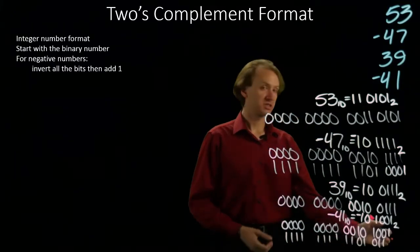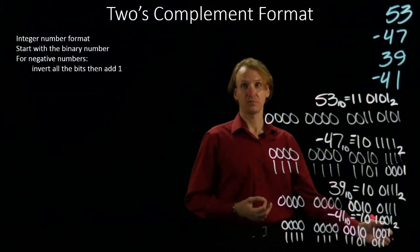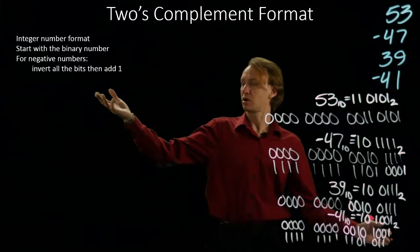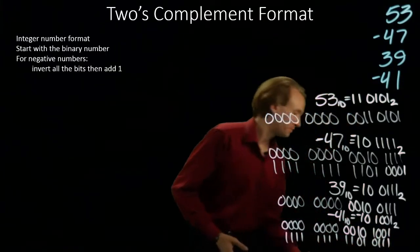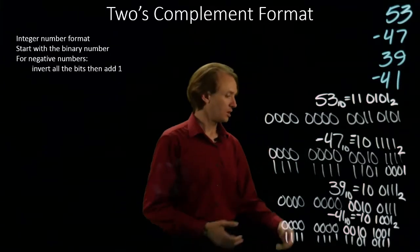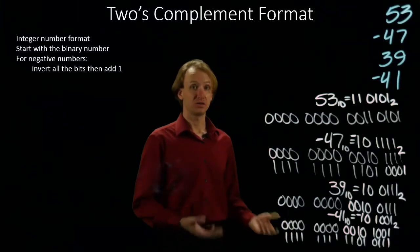And again, I would normally have a 0 here, but the second part of my two's complement operation is to add 1. So 0 plus 1 would give me 1. And there is negative 41 in the two's complement format.